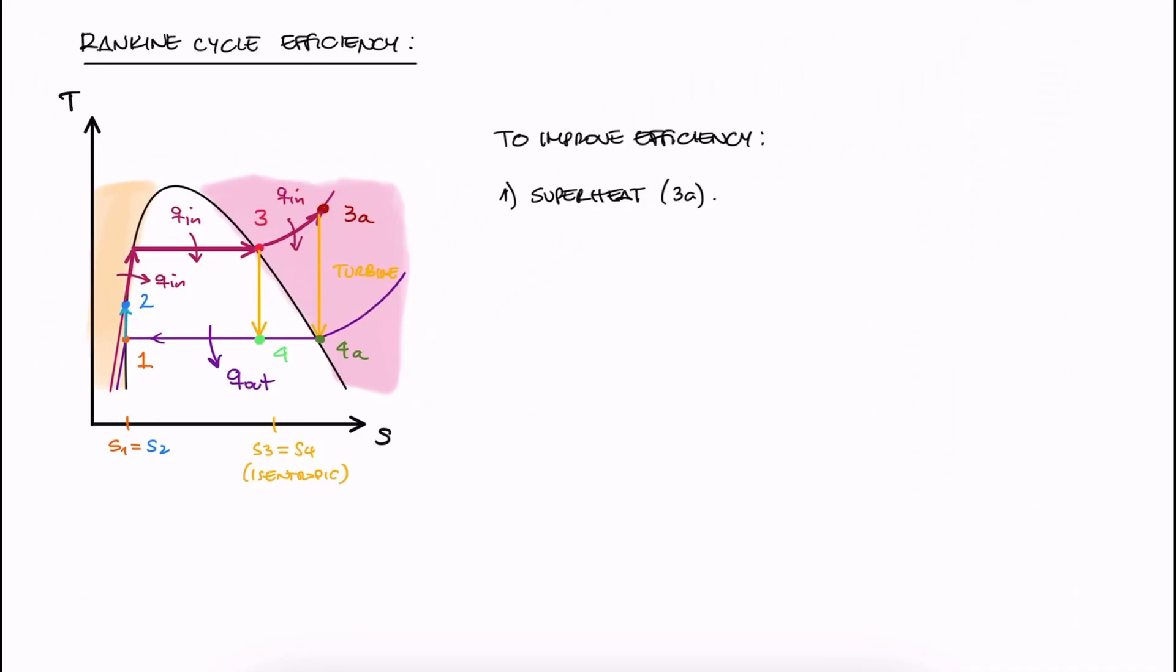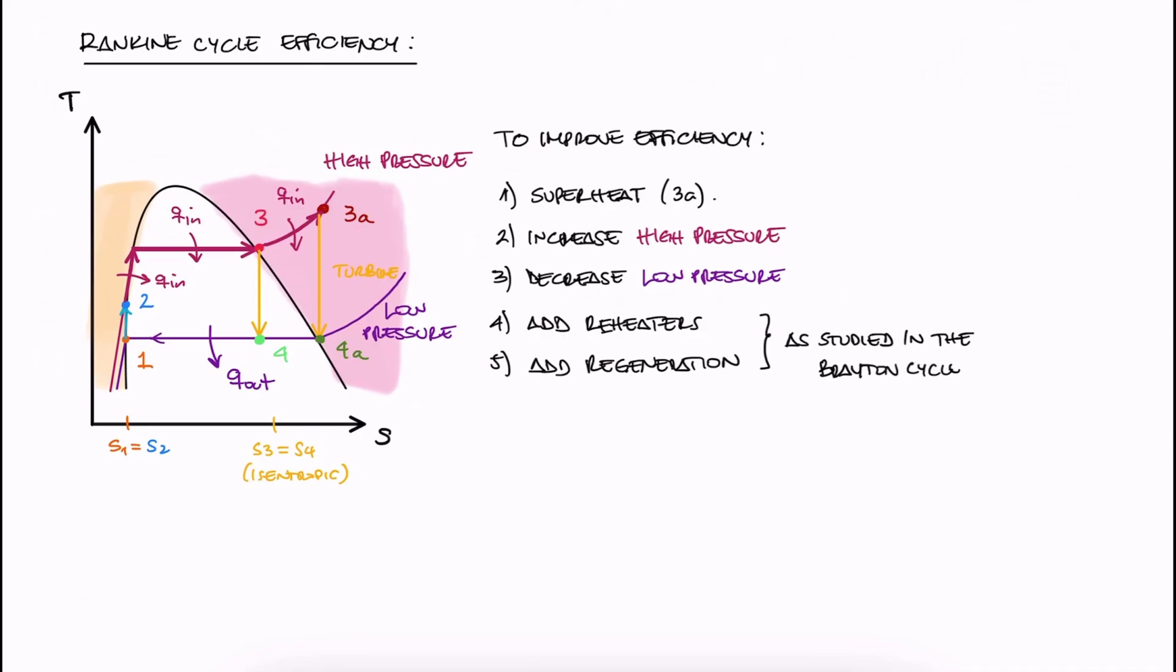There are other strategies to improve efficiency: increase the boiler pressure, decrease the condenser pressure, and incorporate reheating and regeneration, but we won't talk about that here today.